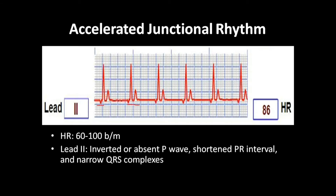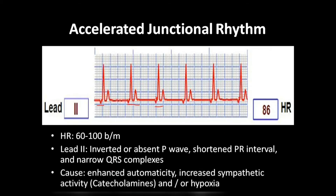You can see all the inverted P waves. The PR interval is shortened — less than 0.12 seconds, that is, less than three small squares. In all cases here, the PR interval is just 0.04 seconds, or one small square. Narrow QRS complexes are also seen.